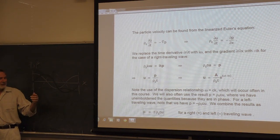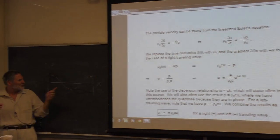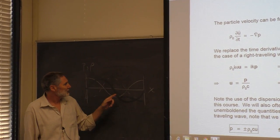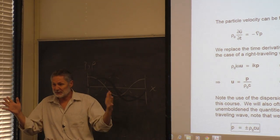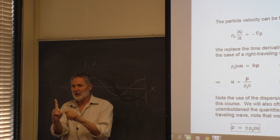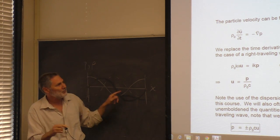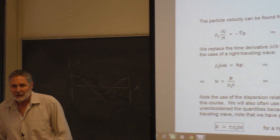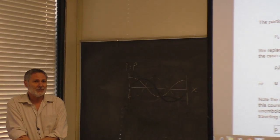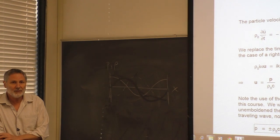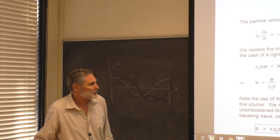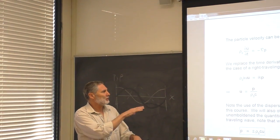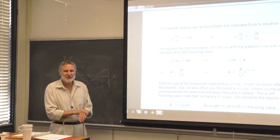For a standing wave, pressure and particle velocity are NOT in phase — they're 90 degrees out of phase. Consider the center of the second mode: particle velocity is zero there by symmetry (everything rushes in and back symmetrically), but the pressure and density are still oscillating. For a traveling wave, however, the condensation, density, pressure, and particle velocity are all in phase with each other.